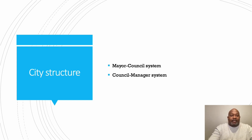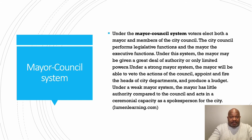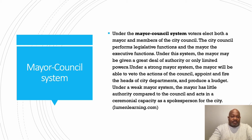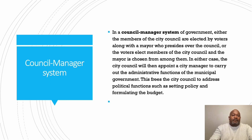When talking about how a city is structured, there are two basic systems in the United States: the mayor-council system and the council-manager system. In the mayor-council system, voters elect both a mayor and members of the city council. The city council performs legislative functions and the mayor the executive functions. Under a strong mayor system, the mayor can veto council actions, appoint department heads, and produce a budget. Under a weak mayor system, the mayor has little authority and acts in a ceremonial capacity as spokesperson for the city.